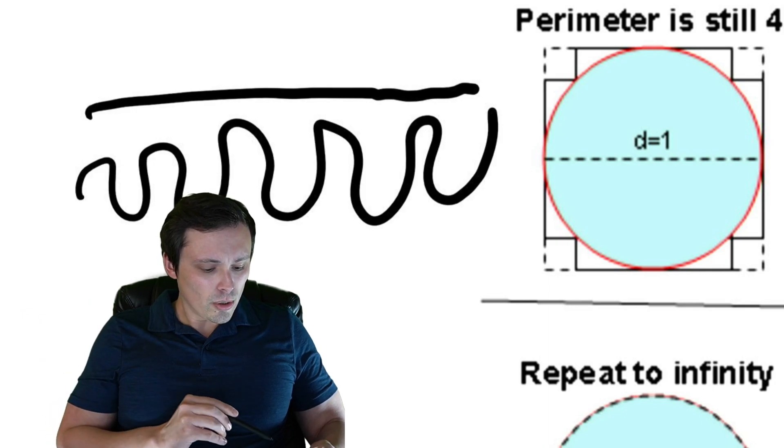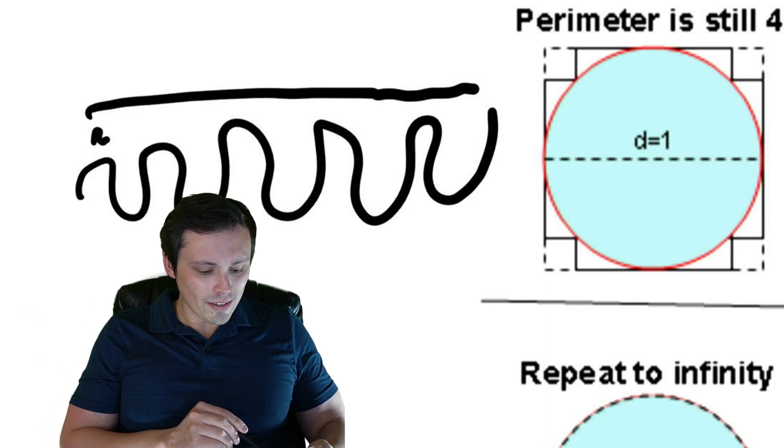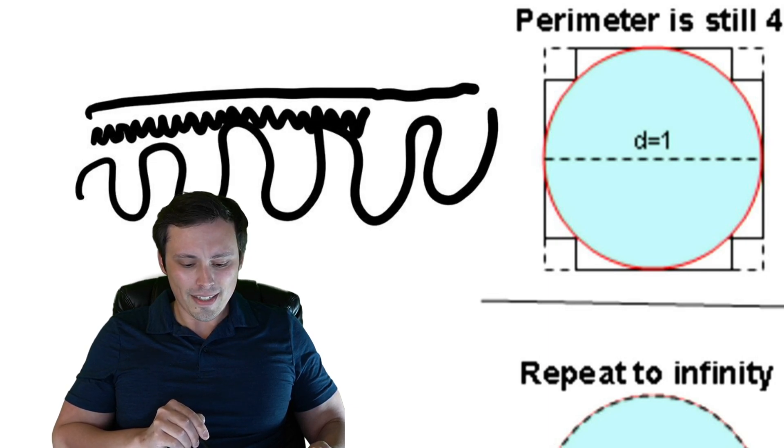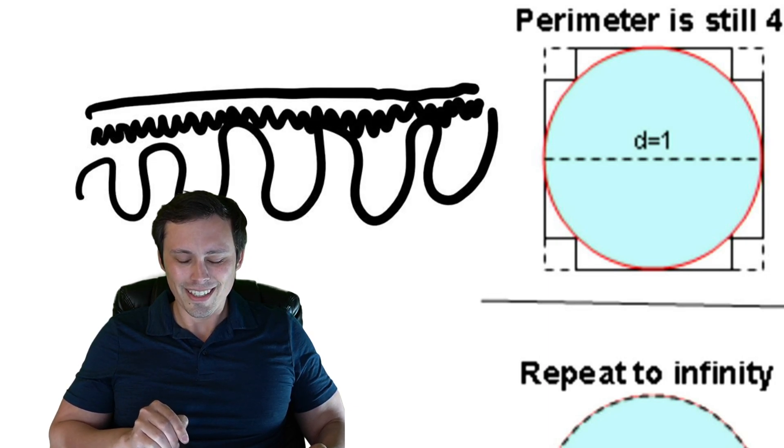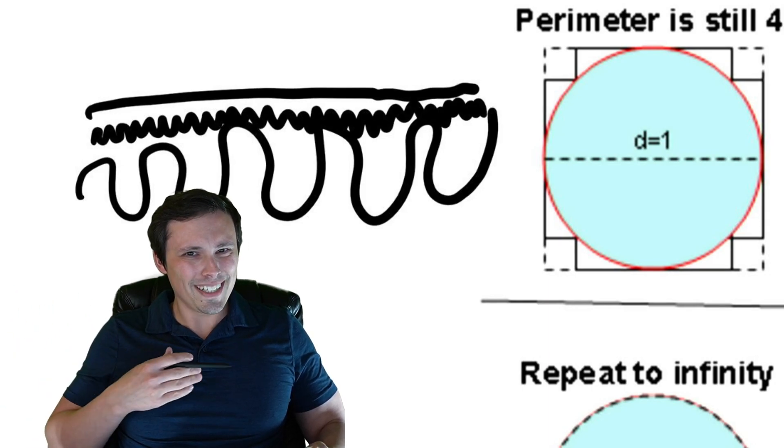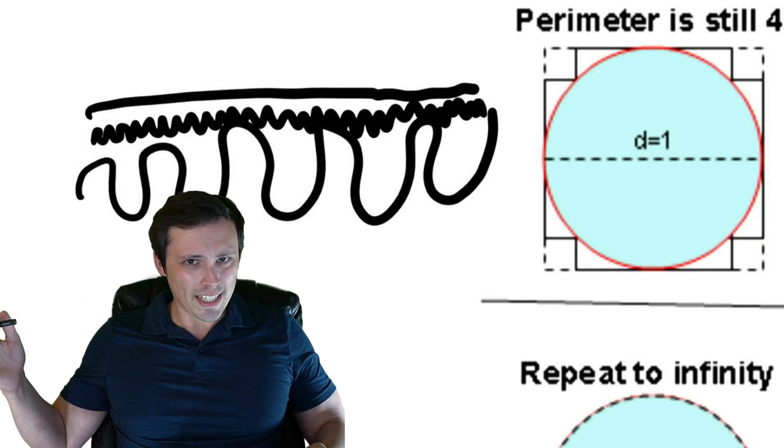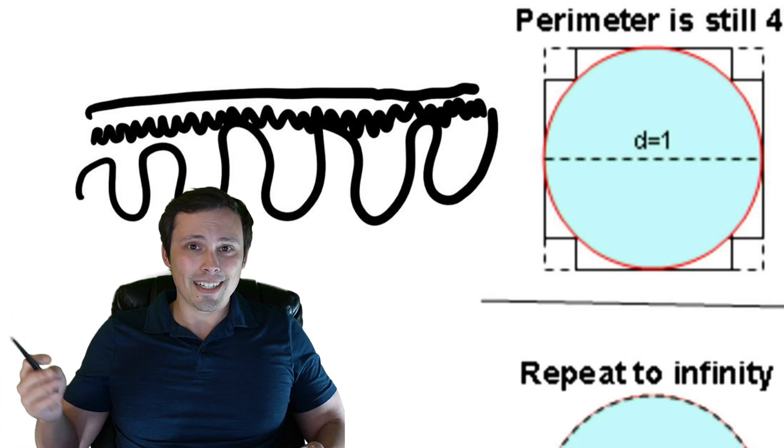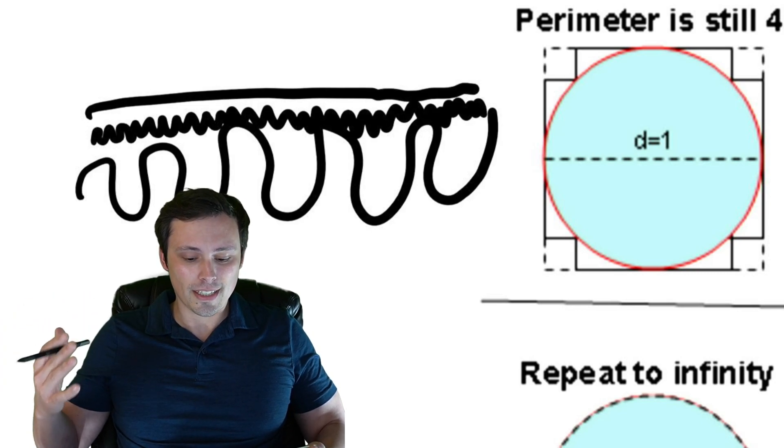So does making those coils tighter and tighter and tighter make this a better argument? It might look more like the line, but it's doing nothing to change the actual length of the rope.